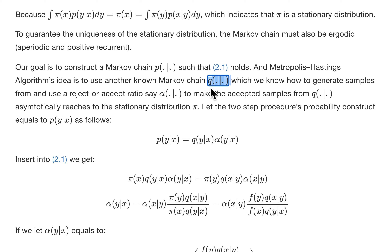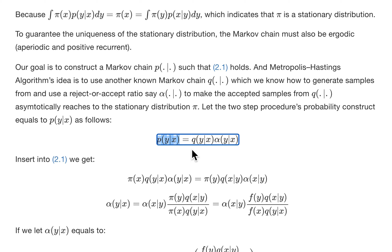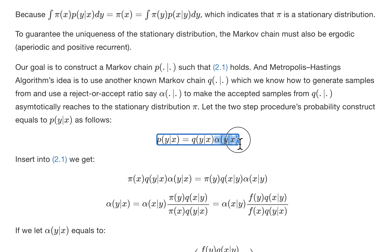Let Q be the Markov chain we use for generating proposals, and let alpha be the acceptance/rejection probability. We let the Markov chain P be equal to Q times alpha — meaning we first propose a sample with probability Q(Y|X), then apply the acceptance probability alpha(Y|X). So we first propose a sample Y and then either accept or reject it based on the probability alpha(Y|X).